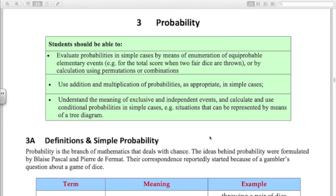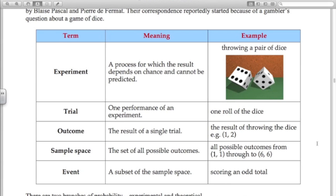Definitions and simple probability. So here's some basic definitions, some words that you probably have already come across. We're doing experiments such as throwing a pair of dice. One performance of the experiment is called a trial. The outcome is the result of the trial. The sample space is the set of all possible outcomes. We're going to talk about sample space in this video. And an event is a subset of the sample space, such as scoring an odd number when we roll two dice, when we're scoring an odd total.